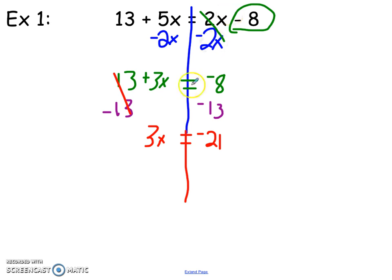The inverse of multiplying by 3 is dividing by 3, and we'll do that on each side. And I'm left with x equals negative 7. Negative divided by positive is a negative.